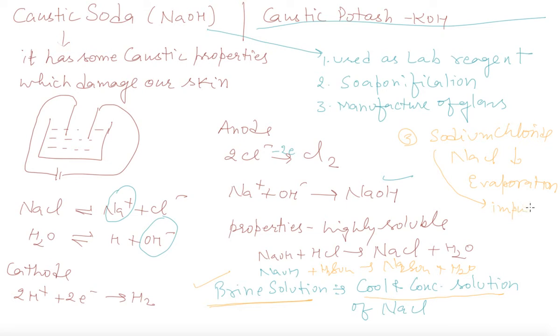NaCl is not actually deliquescent, but it becomes deliquescent due to the impurities of magnesium chloride. Please learn and revise. It is a crystalline solid, soluble in water, and used for domestic purposes and in the extraction of sodium metal.